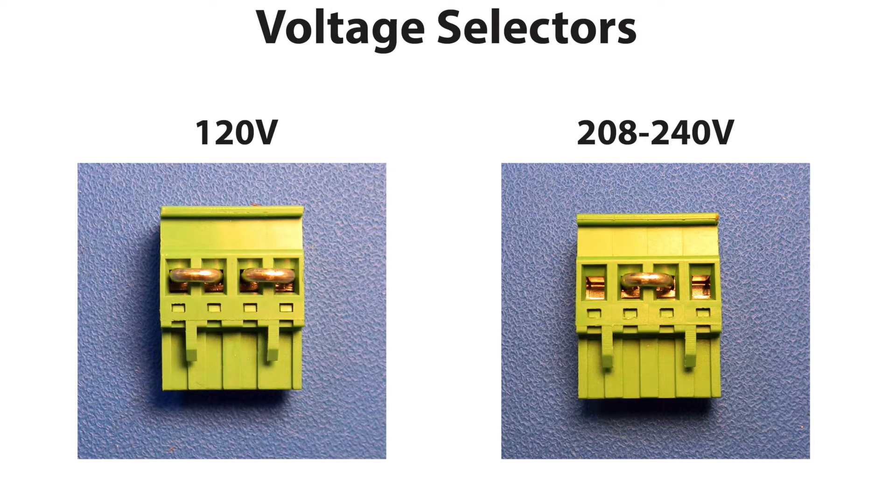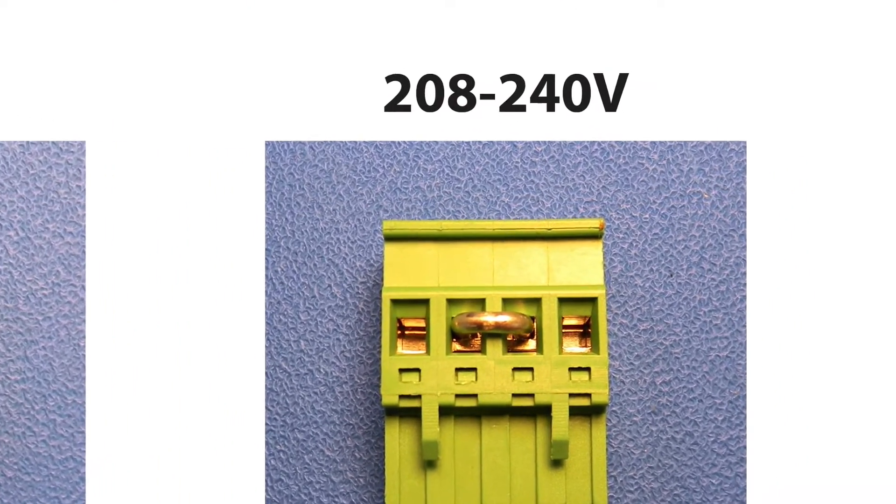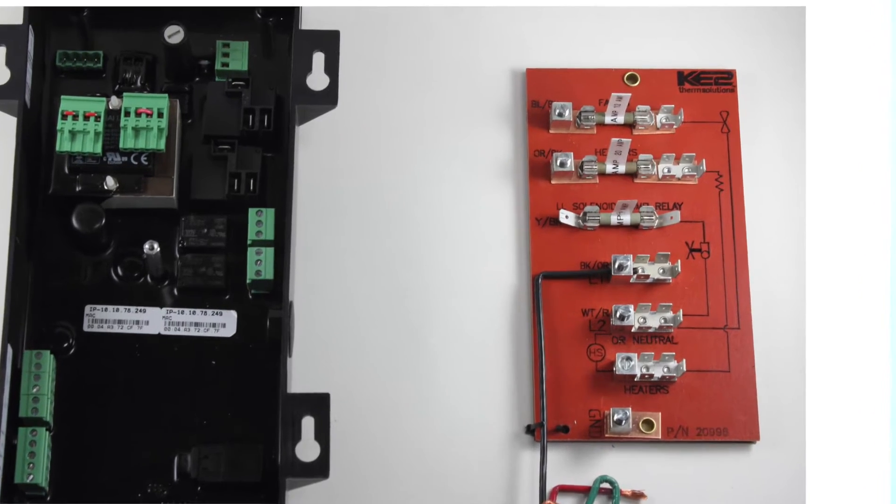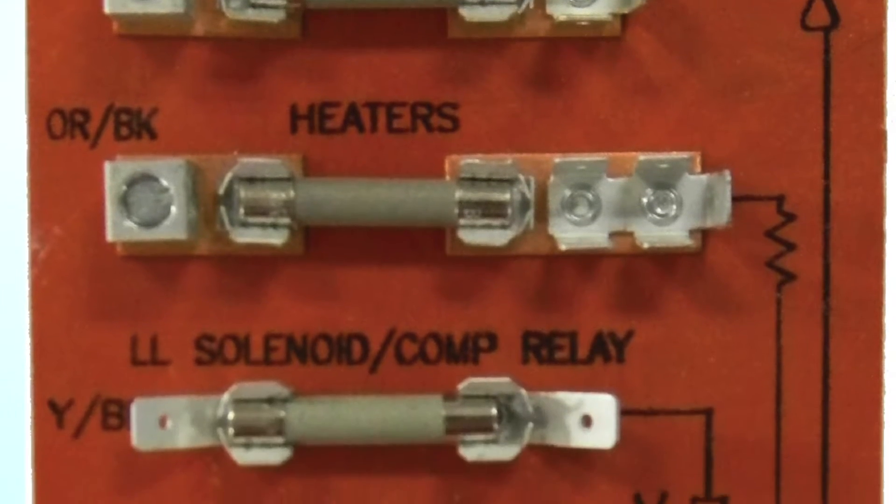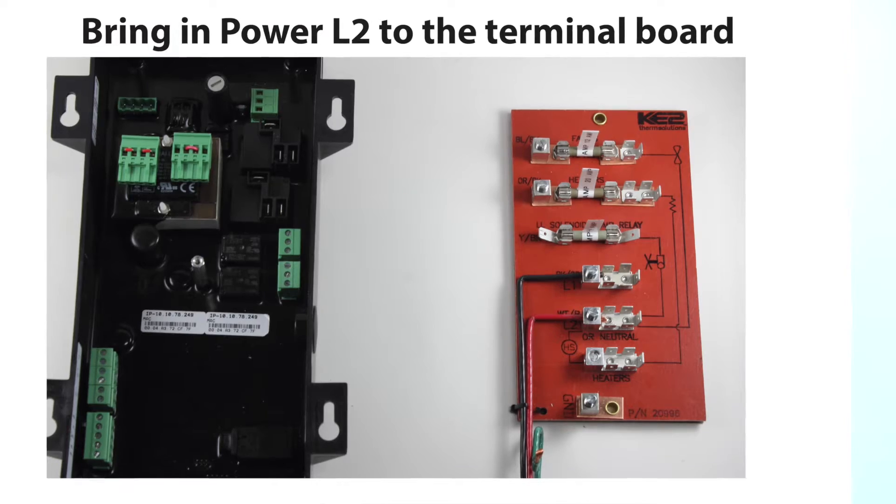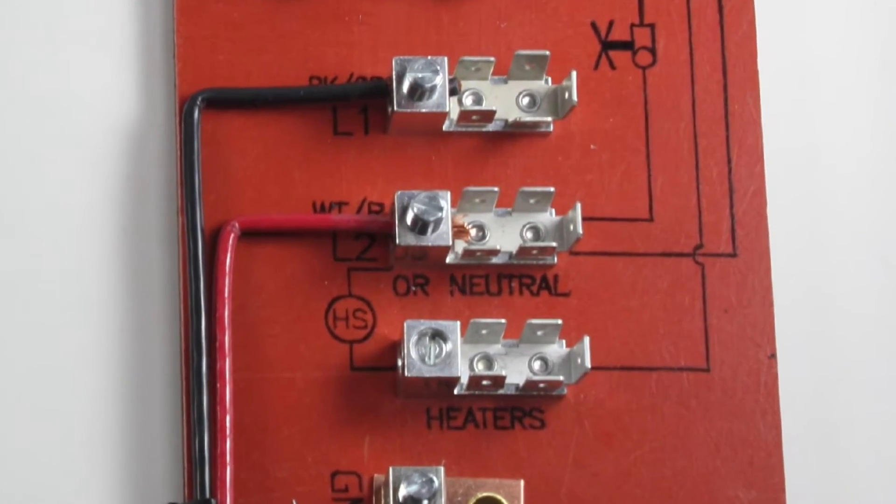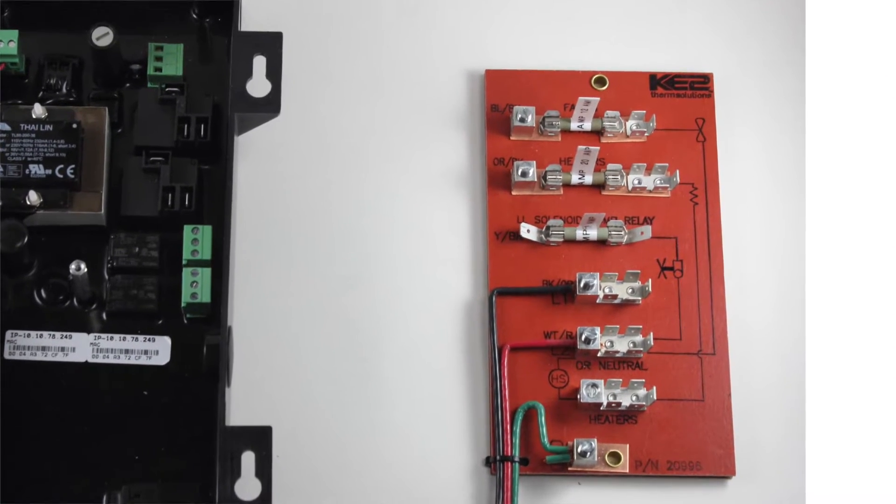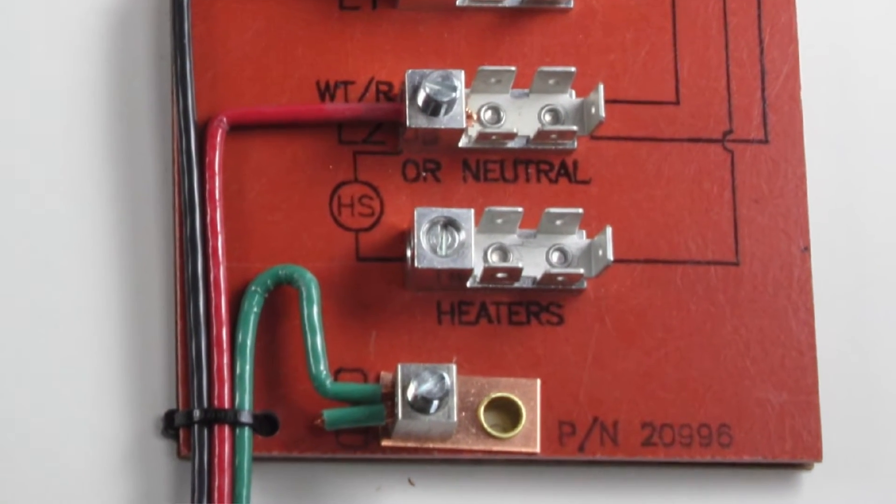Just select the correct green pluggable connector for your application. This example uses 208 volts as the uninterrupted power source. Place black L1 in the L1 location as shown on the terminal board. The terminal board has all of the fuses pre-installed. Place red line 2 in the L2 location as shown on the terminal board.